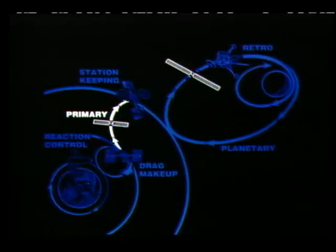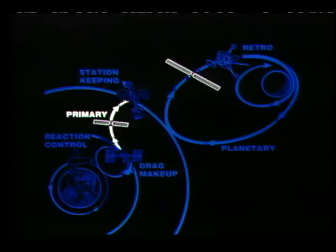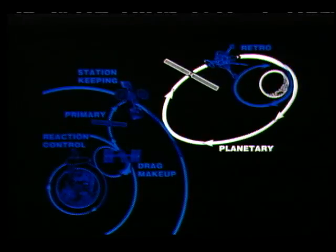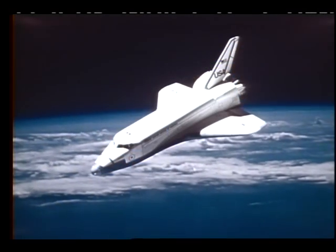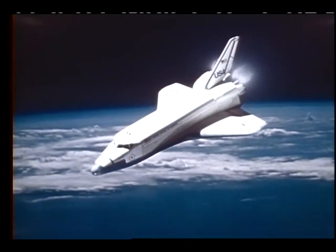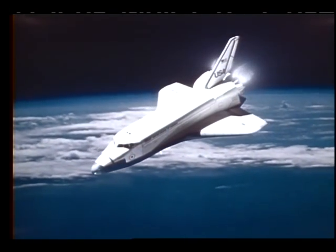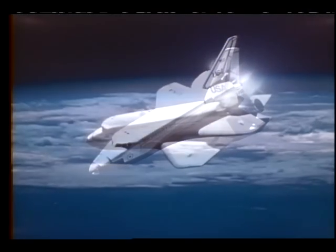Primary propulsion functions include the moving of space vehicles from point to point in Earth space, as well as propulsion from Earth space to various planetary bodies. On Earth-to-orbit vehicles such as the shuttle orbiter, low thrust propulsion systems are used to control the orientation of the vehicle.